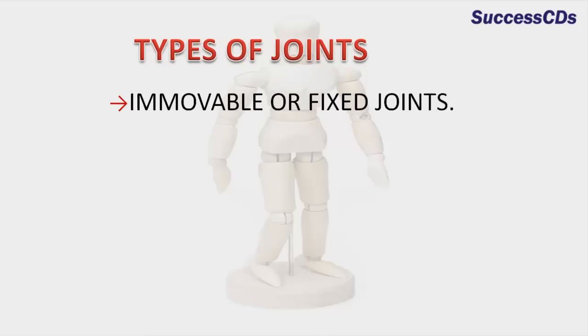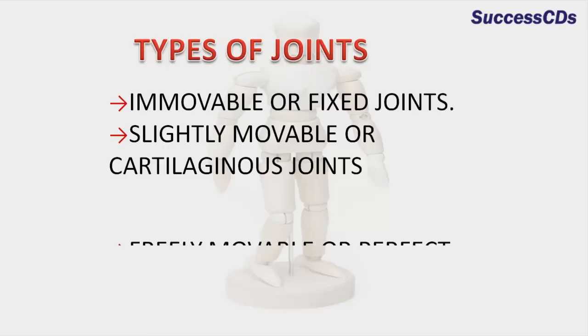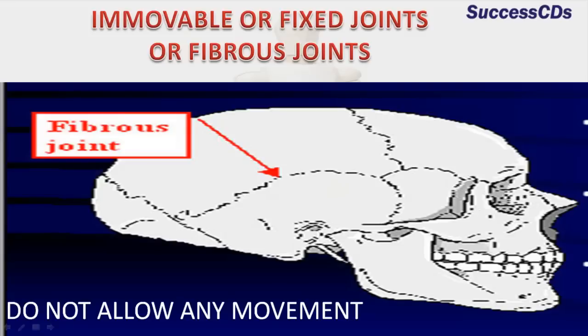Immovable or fixed joints, slightly movable or cartilaginous joints, and freely movable or synovial joints. Immovable joints do not allow any movement. They are usually found between the bones of the skull, in the joints between the upper jaw and the rest of the head, and in the tooth sockets.